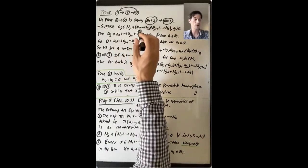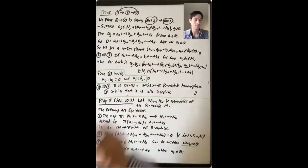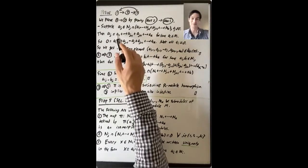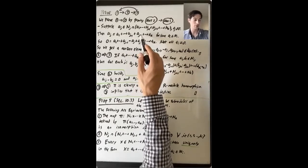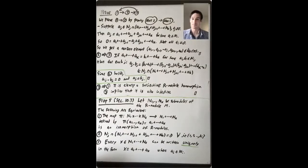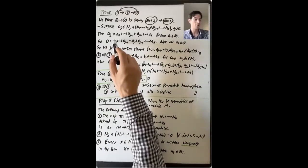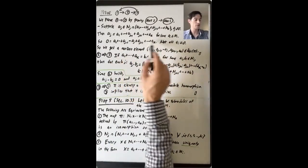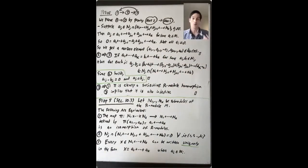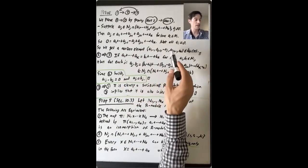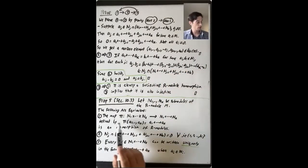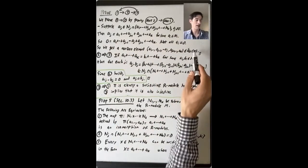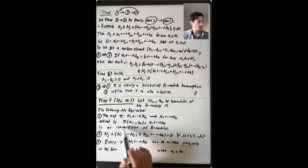So a_j is in N_j and also in N1 + ... + N_{j-1} + N_{j+1} + ... + NK, meaning a_j = a1 + ... + a_{j-1} + a_{j+1} + ... + ak where each a_i ∈ N_i. Subtracting a_j from both sides gives 0 = a1 + ... + a_{j-1} − a_j + a_{j+1} + ... + ak, where not all terms are zero (in particular, −a_j ≠ 0). So this is a non-zero element in the kernel of the map π, meaning π is not injective and hence not an isomorphism.